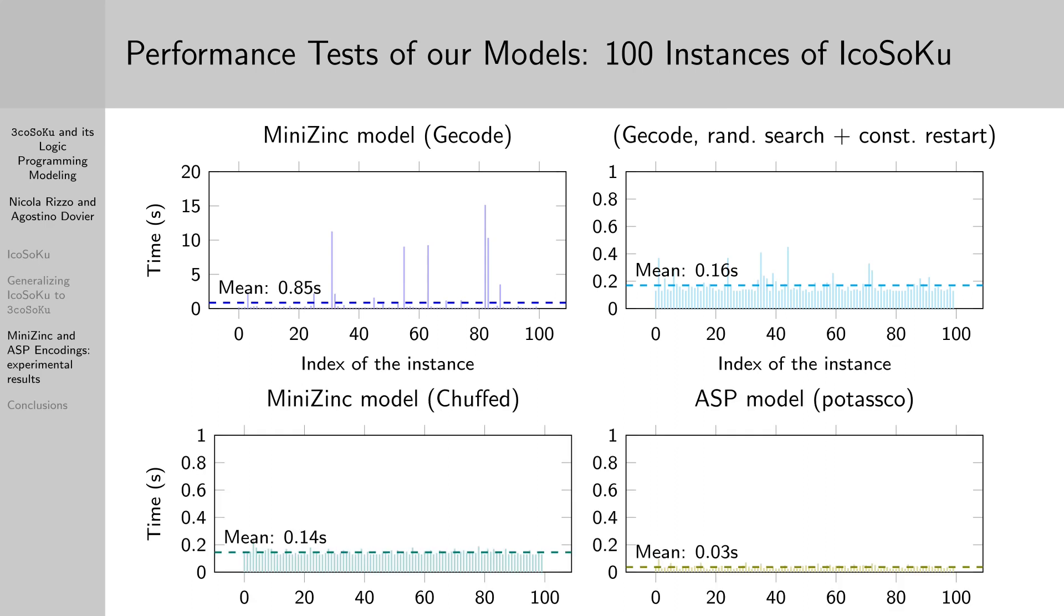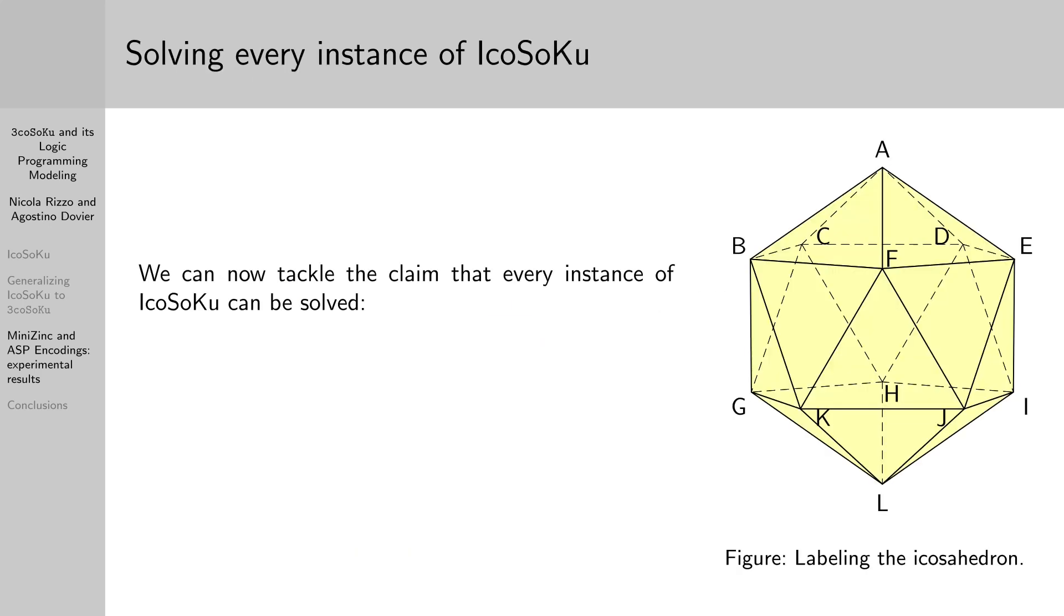Now that we have solvers that are quite fast, we can tackle the claim that every instance of Icosoku can be solved. Each instance is defined by a permutation of the numbers from 1 to 12, but we don't need to solve every permutation. Without loss of generality, we impose vertex A to have a capacity equal to 1, and then we impose vertex B to have a capacity less than or equal to those of C, D, E, and F.